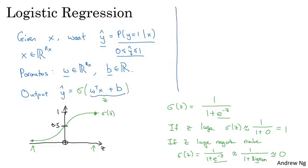Before moving on, just another note on the notation. When we program neural networks, we'll usually keep the parameter w and parameter b separate, where here b corresponds to an intercept term. In some other classes, you might have seen a notation that handles this differently. In some conventions, you define an extra feature called x0 and make that equal to 1, so that now x is in R of nx plus 1.